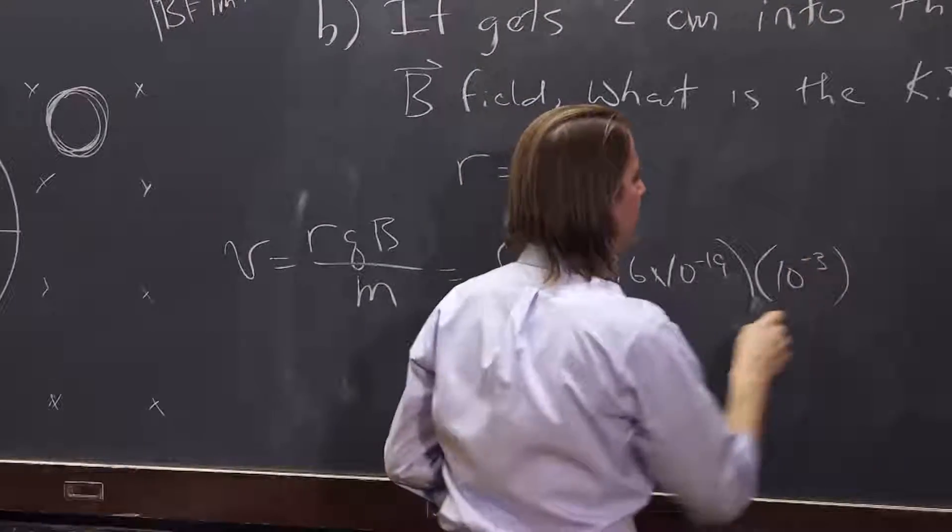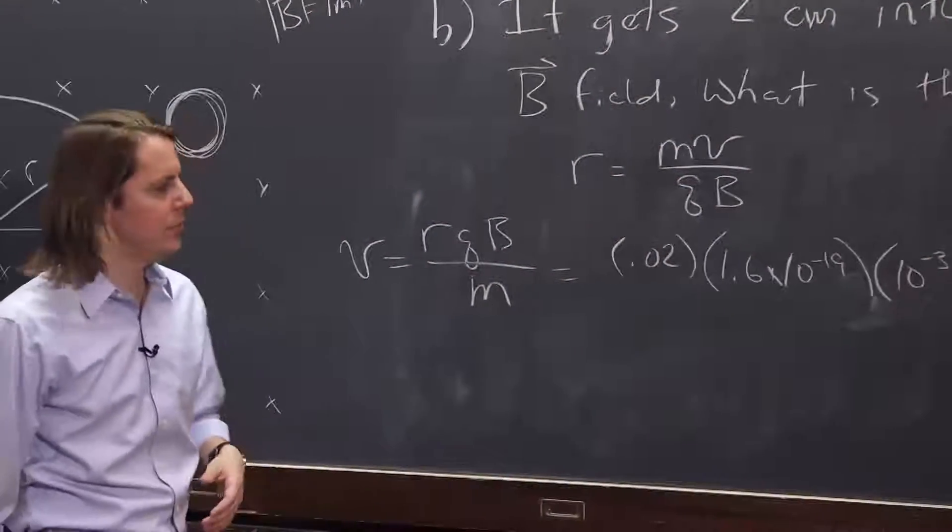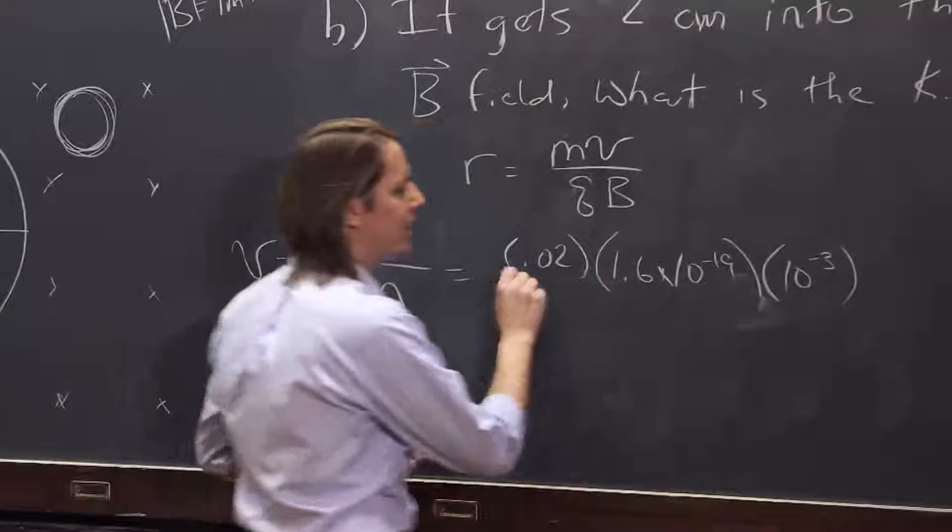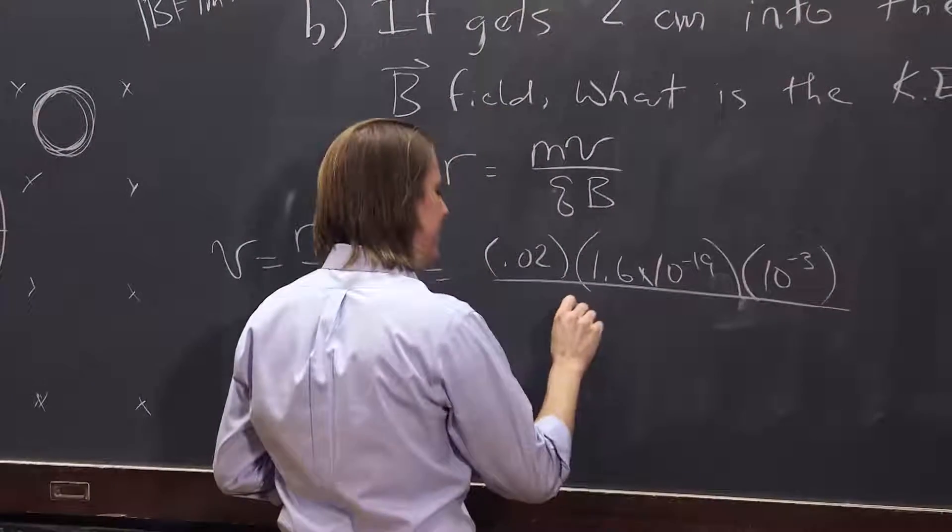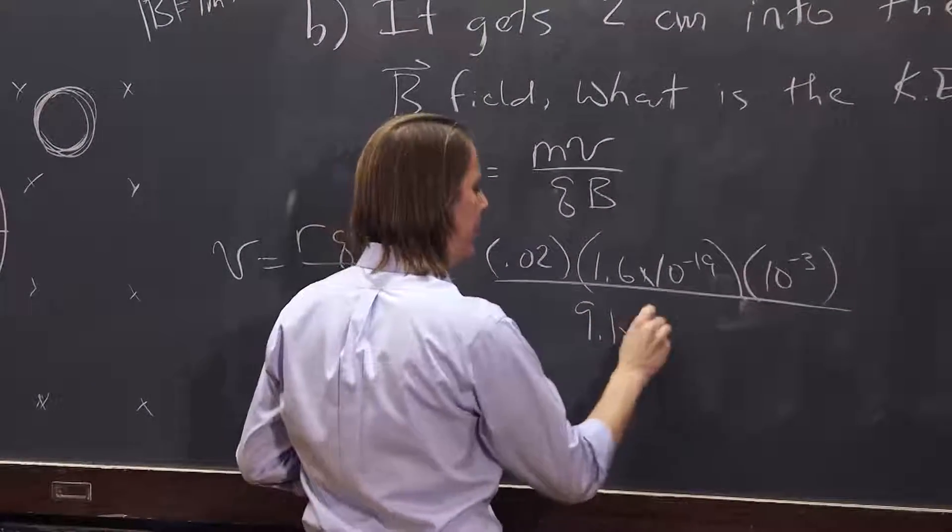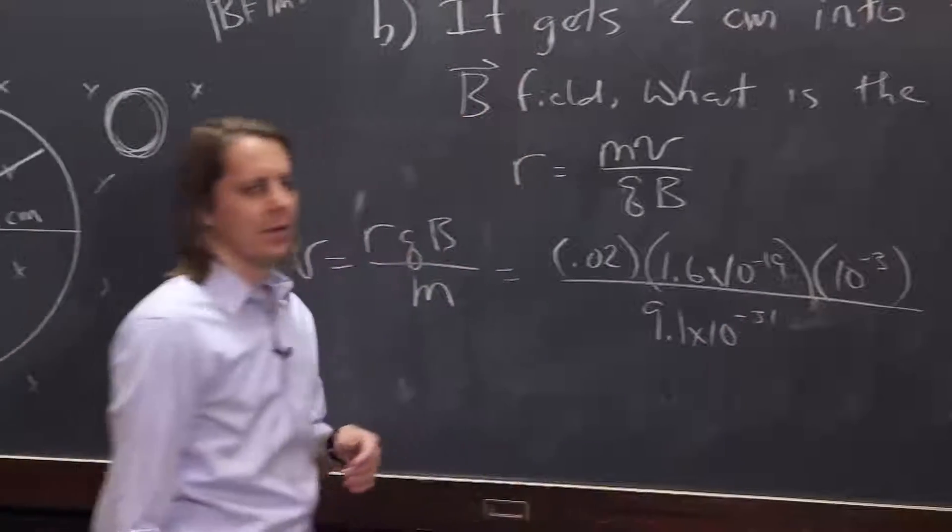B, 10 to the minus 3 teslas, it was a milli-tesla, right, one milli-tesla. And then over m is 9.1 times 10 to the minus 31, because that's in kilograms.